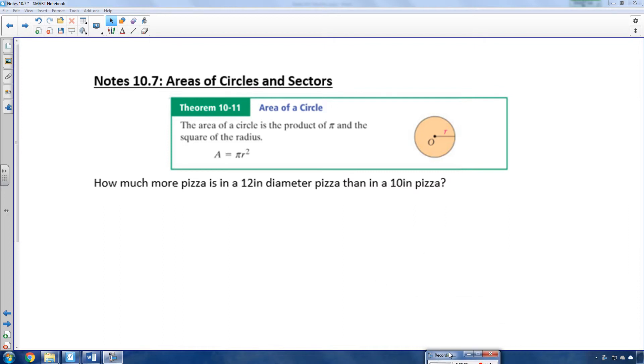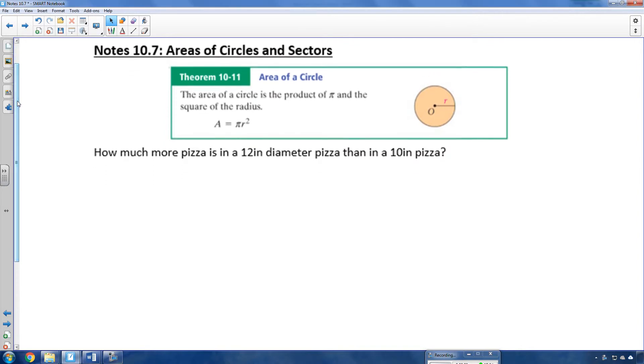All right, so these notes are on Earth Geometry 10.7, the area of circles and sectors. Now, we obviously know the area of a circle is pi r squared, but we want to know if we were to buy the 12-inch diameter pizza or the 10-inch diameter pizza, which one would be smarter, how much more pizza would we get, would it be worth the cost?